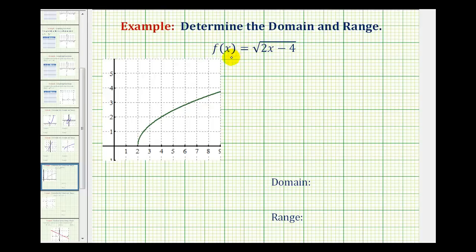We want to determine the domain and range of the function f of x equals the square root of two x minus four. Now there's a couple ways of doing this based upon how much we know about a given function.